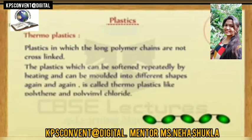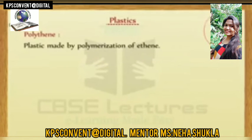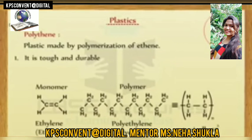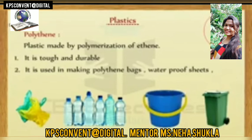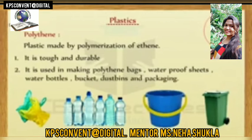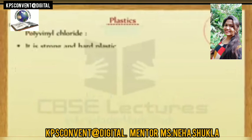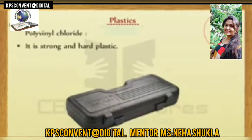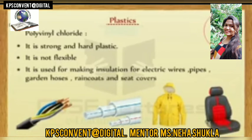Examples of thermoplastics include polythene and polyvinyl chloride. Polythene is a plastic made by polymerization of ethene. It is tough and durable, used in making polythene bags, waterproof sheets, water bottles, buckets, and dustbins. Polyvinyl chloride (PVC) is a strong and hard plastic; it is not flexible. It is used for making insulation for electric wires, pipes, garden hoses, raincoats, and seat covers.